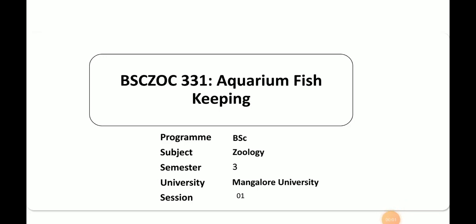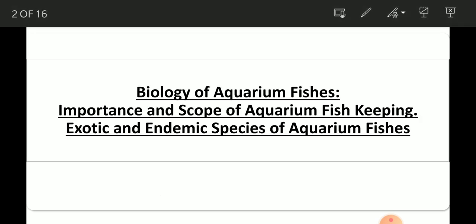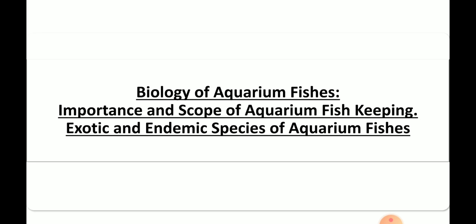Hello everyone. In this session we are going to discuss about the elective paper for second year BSc students, that is aquarium fish keeping. In this session mainly we will be discussing about the biology of aquarium fishes, importance and scope of aquarium fishes, and how different types of exotic and endemic species of aquarium fishes are there.